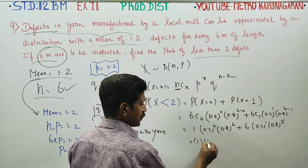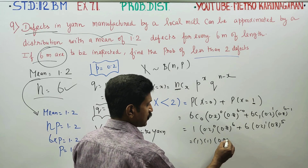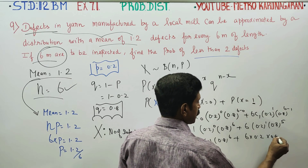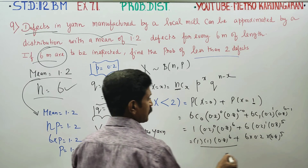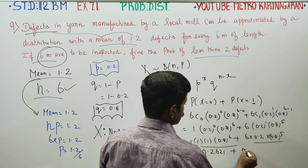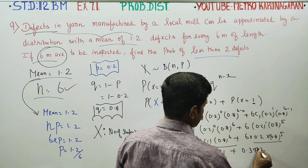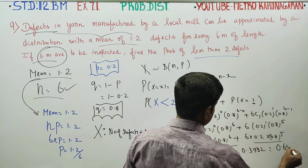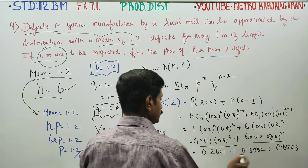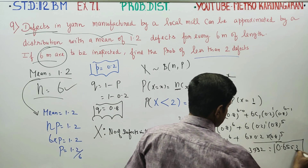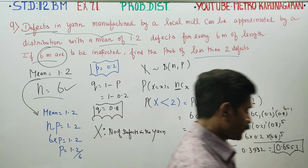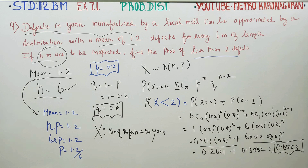Anything to the power 0 is 1. Computing: (0.8)^6 plus 6 × 0.2 × (0.8)^5 gives the final answer of 0.6553.